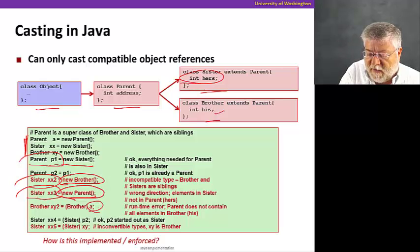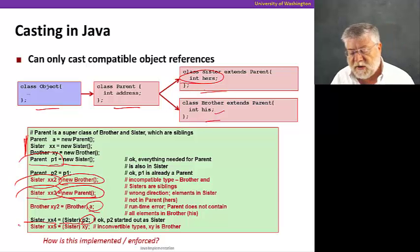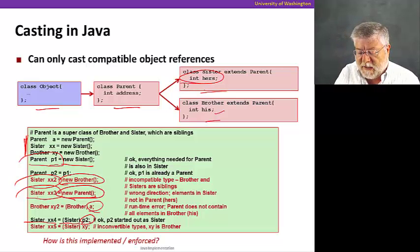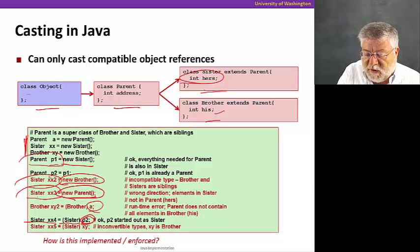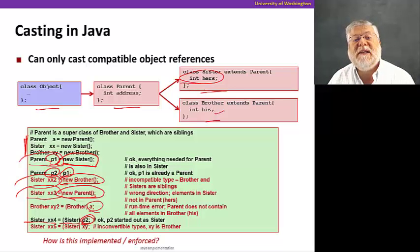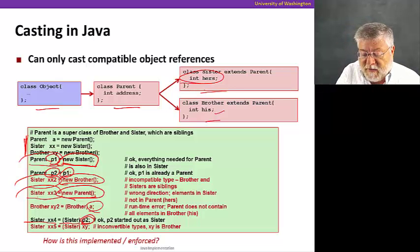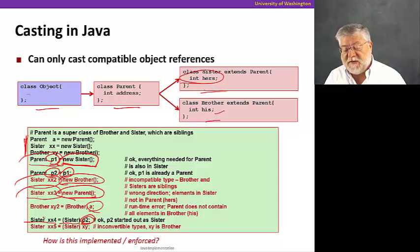Here's one that does work. If we take a parent object, cast it as sister, and then assign it to another variable of type sister. Why does that one work? Well, this one turns out to work because this original object, P2, started out as something of type sister. You'll notice that P2 was assigned P1, and P1 was originally an object of type sister that was cast as a parent. But it started its life as an object of type sister, so that it has everything a sister needs, a sister object needs. And so therefore, that cast works out.